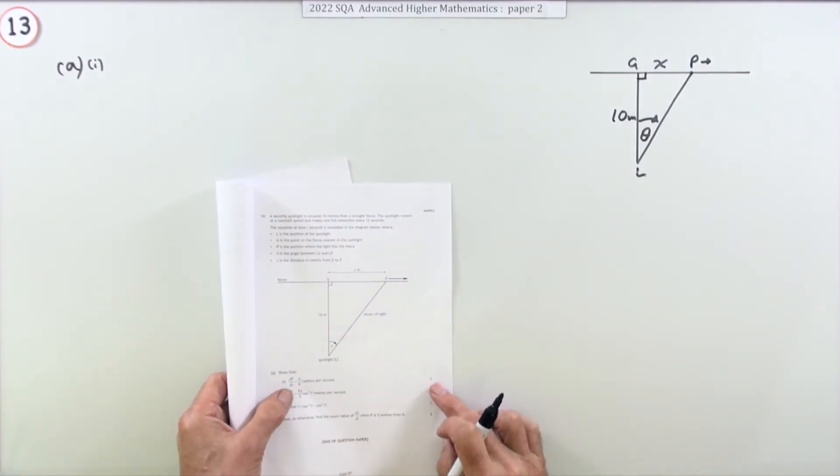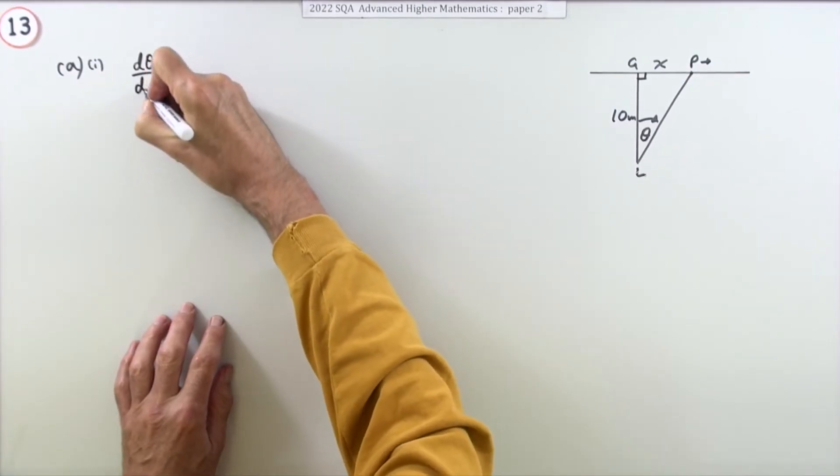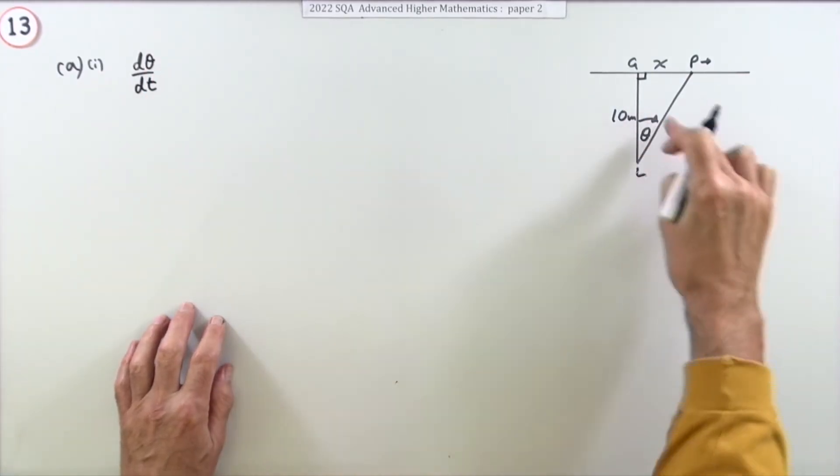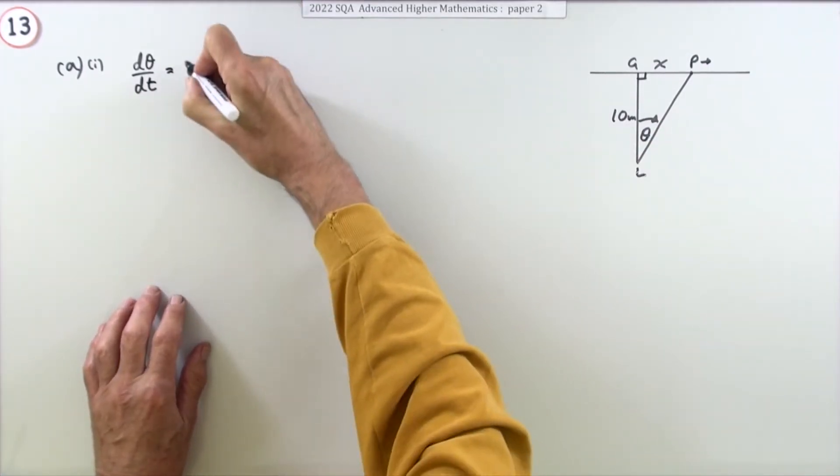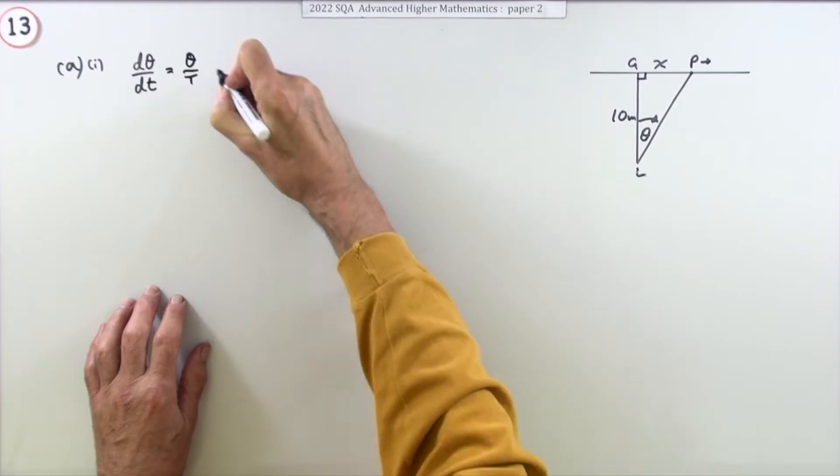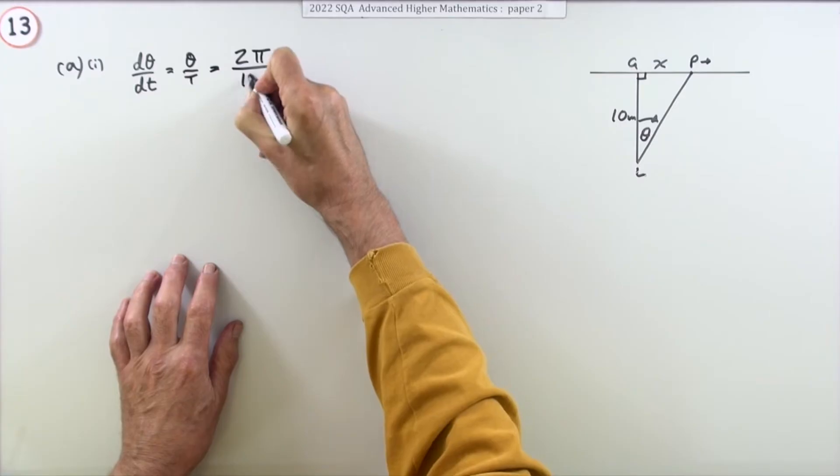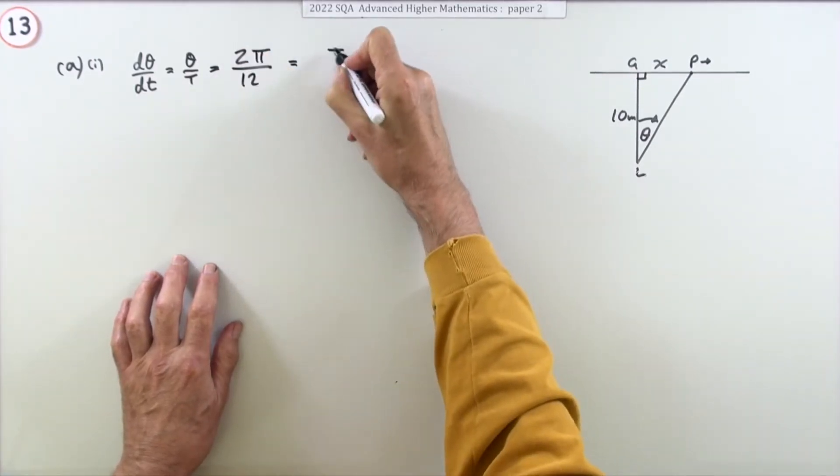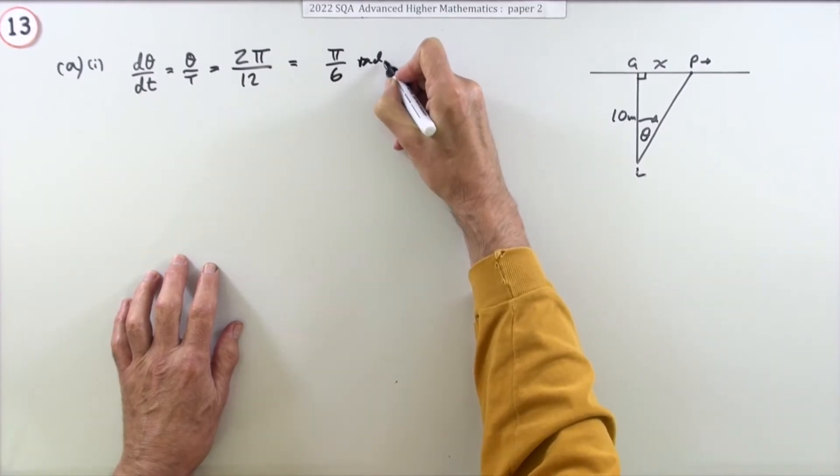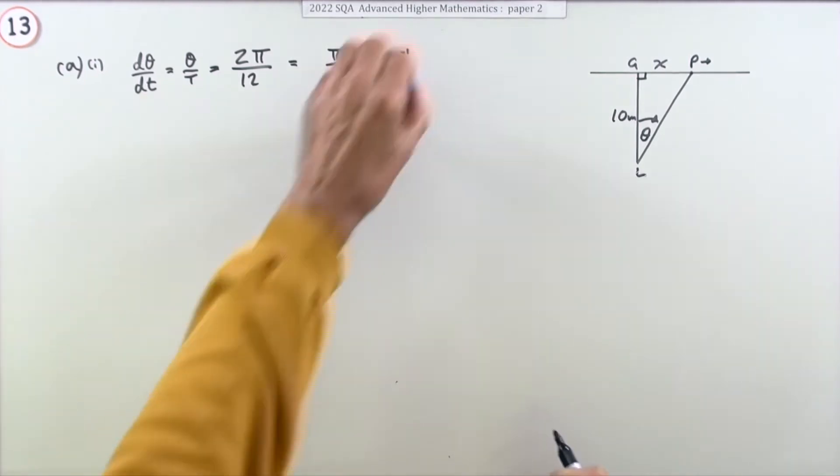Show that dθ/dt for one mark is π/6 radians per second. Well that's fairly straightforward. dθ/dt is the angular velocity of that spotlight, and since that's constant, it'll just be the angle divided by the time it took. So it did 2π radians in 12 seconds, which means dθ/dt will be π/6 radians per second. I'll do the little seconds to the negative one. That gets a mark.